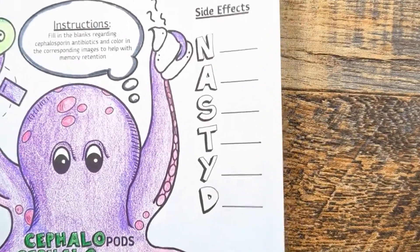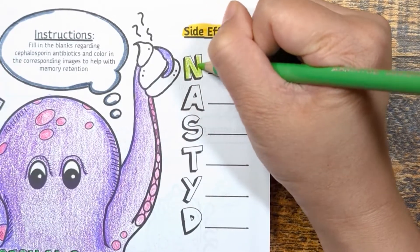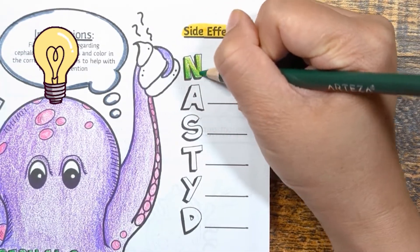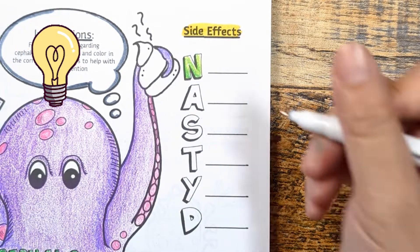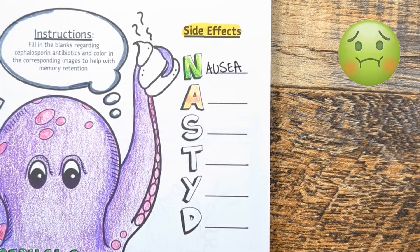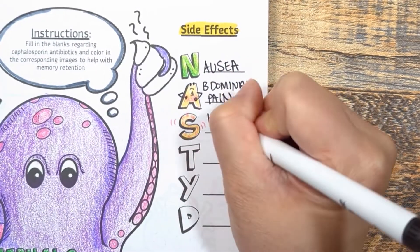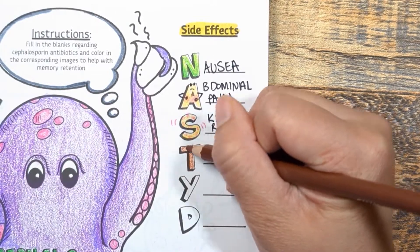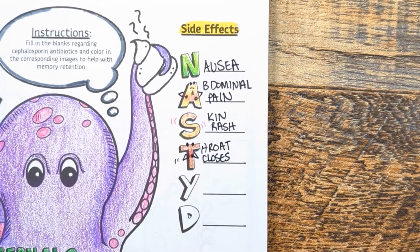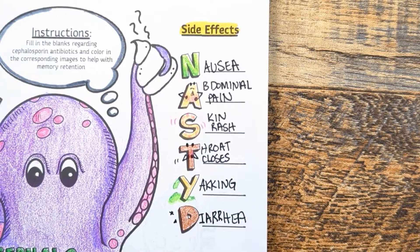Moving on to side effects. Cephalosporins have the same side effects as penicillins, with the majority of them being GI related or allergic reactions. Think back to the same mnemonic we use to memorize penicillin side effects — the mnemonic NASTYD: N is for nausea, so let's color in this N looking nauseous. A is for abdominal pain. S is for skin rash or seizures with high doses, especially in patients with renal impairment — color this S as though shaking with seizures and itching all over. T is for throat closes, to remind you of allergic reactions such as anaphylaxis. And D is for diarrhea, as taking antibiotics can disrupt the normal GI flora and lead to the side effect of diarrhea.